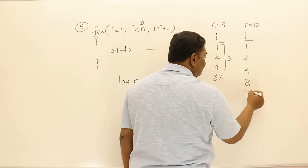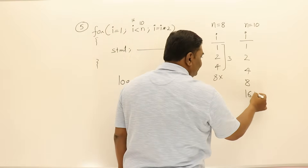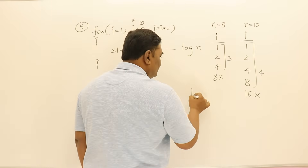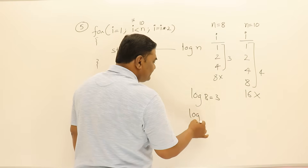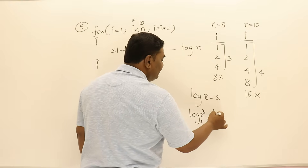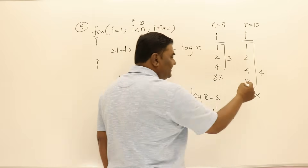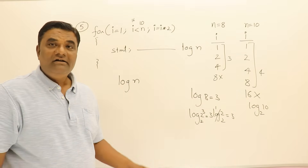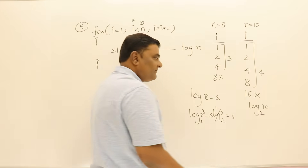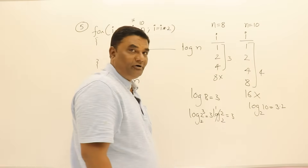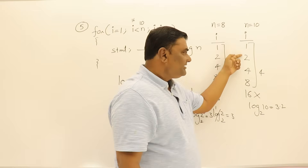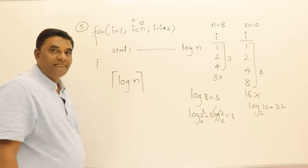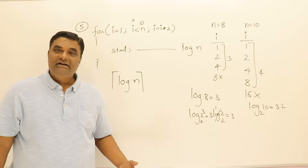Now with n equals 10: i goes 1, 2, 4, 8 (all less than 10), then 16 — not less than 10, so it stops. That's 4 iterations. Log 10 base 2 is approximately 3.2. But the actual count is 4 times, so we must take the ceiling value. This means when using log n, it should be taken as ceiling — whether to use floor or ceiling is an important consideration.